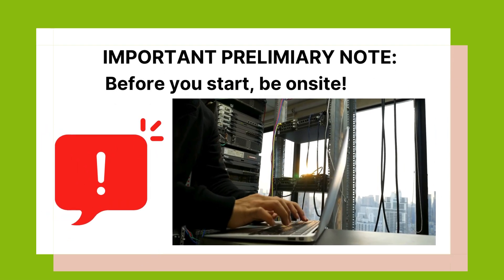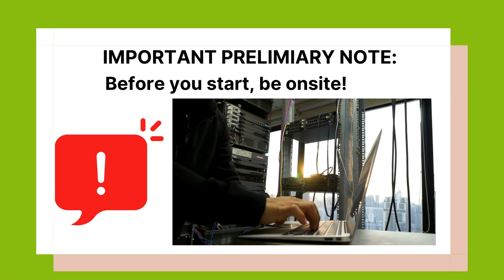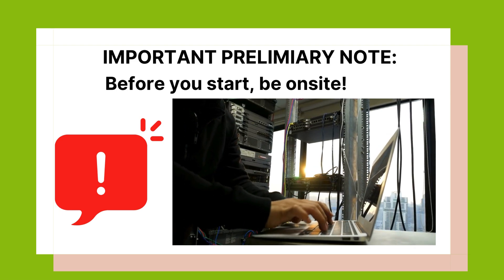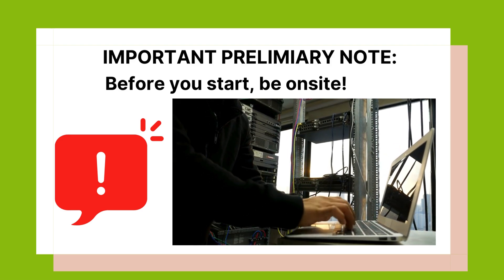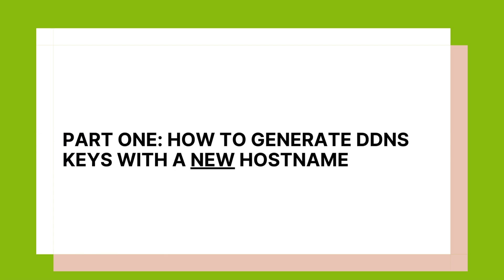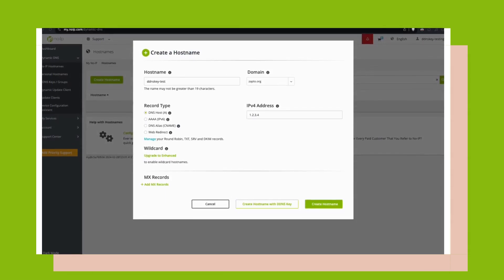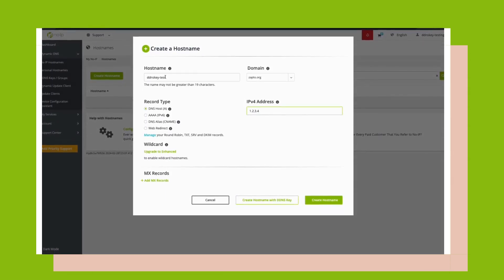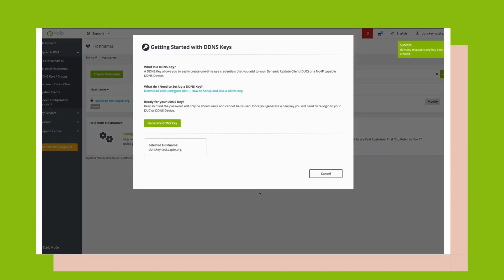Before you start Part 1, make sure you are on-site and have access to the update client. To utilize your DDNS key, you'll need to add it to the device. If you create a DDNS key and are not on-site to update the credentials in the device, your updater could stop working. Follow the steps in the window to generate your DDNS key. Here, you can create a new hostname while generating the DDNS key. On the next window, click Generate DDNS Key. This will create the DDNS key and bring you to the DDNS key setup modal.